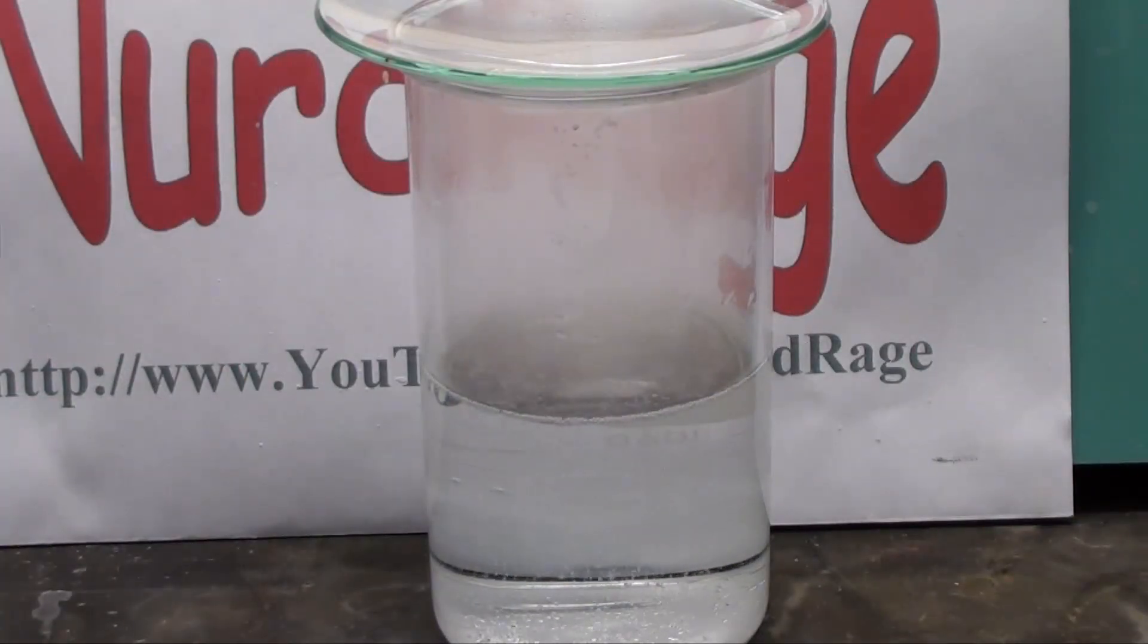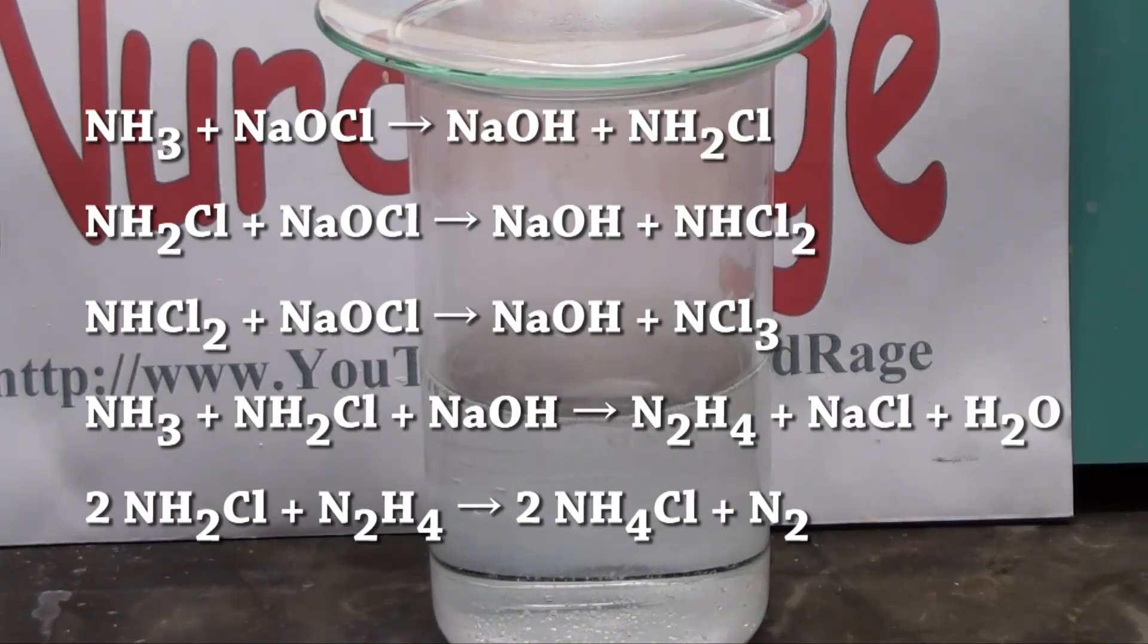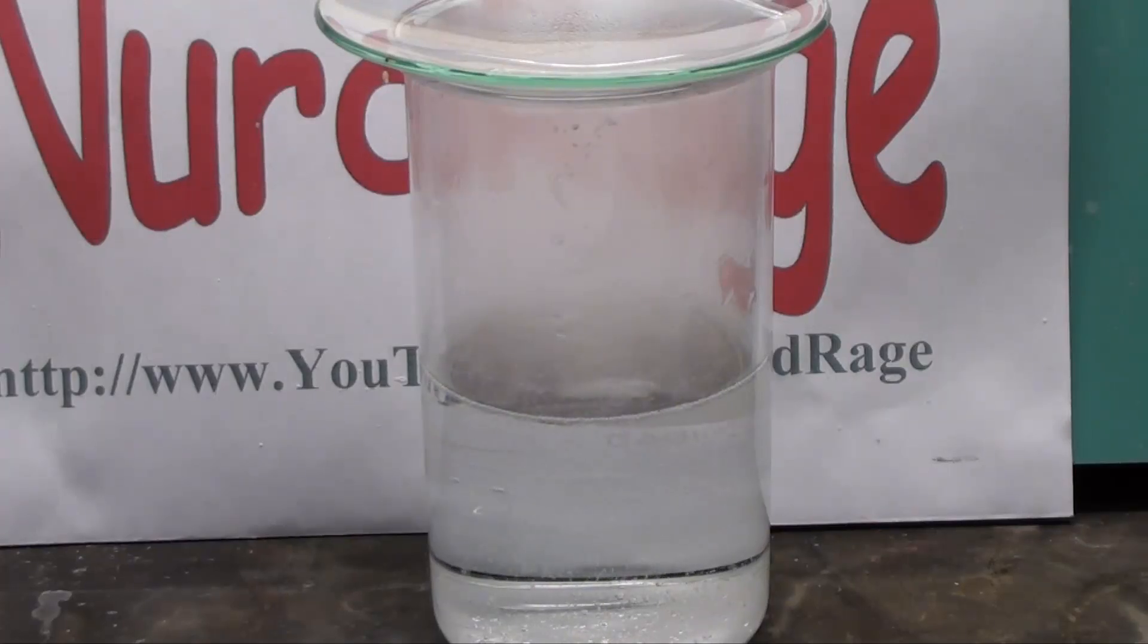As you can see here there is no yellow chlorine formation. But it is reacting though and producing many different products including nitrogen gas, and various toxic products such as traces of hydrazine, chloramine, dichloramine and nitrogen trichloride. So you still shouldn't mix ammonia and chlorine bleach, but understand that it's not making chlorine gas.